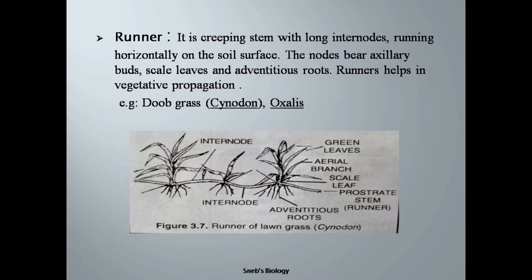The first is runners. In case of a runner, the plant is very small. Some part of the stem is aerial and some part is below the ground. From the stem, on the lower side, roots arise — these are the adventitious roots — and on the upper side, leaves arise. The runners in the stem give rise to a branch which runs parallel to the ground, and this branch also has nodes and internodes.